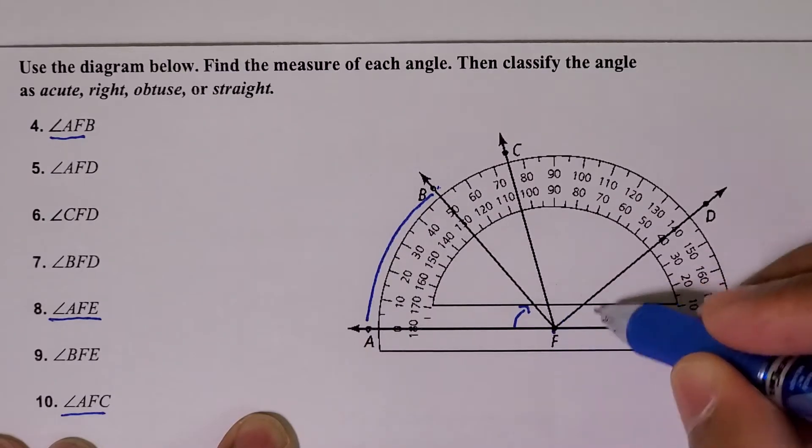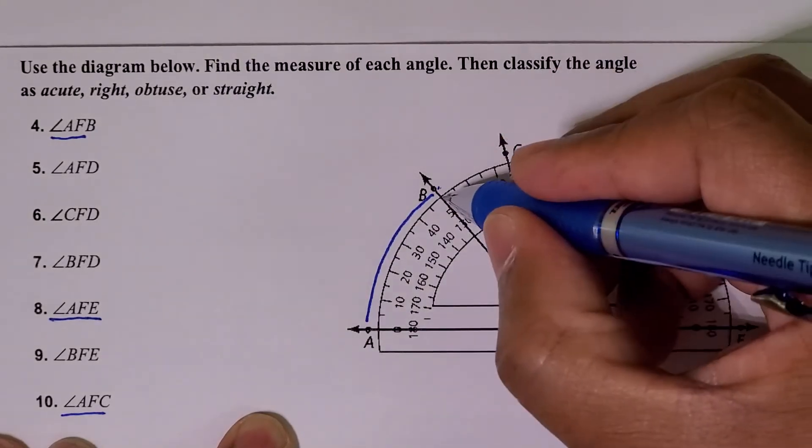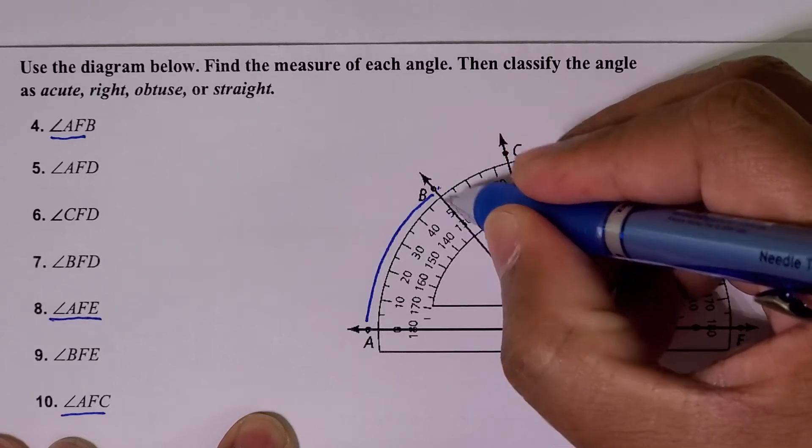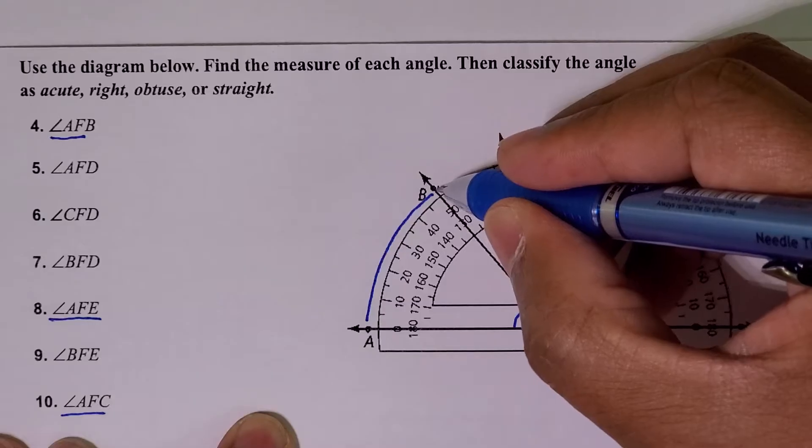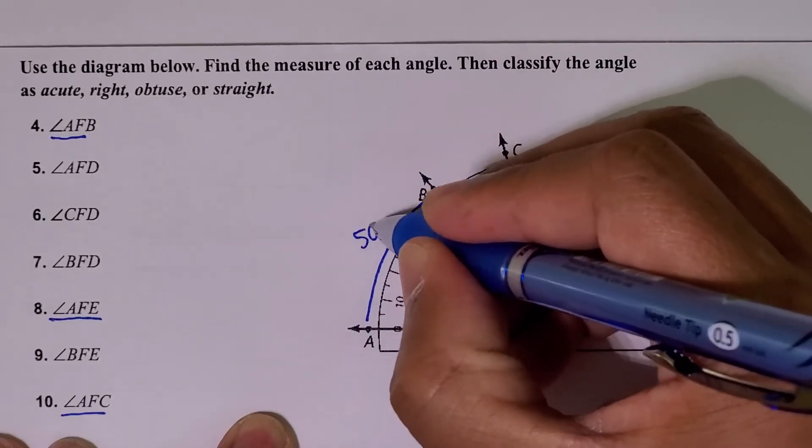So that tells you that the measure of angle AFB is 50 degrees.